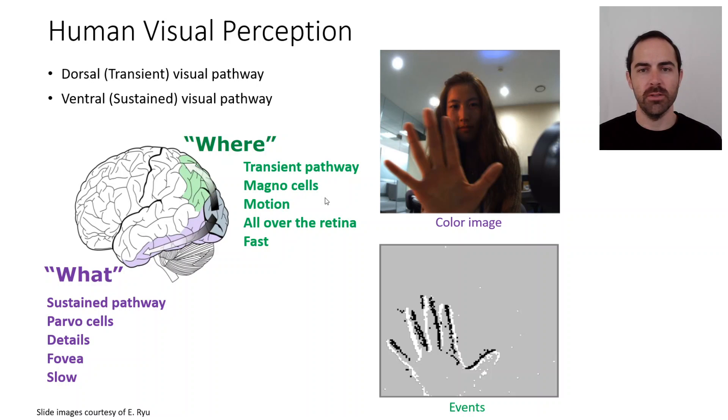If we had to show a representation of the visual information in the where pathway, that would be the one on the bottom. In this case there's a person with the hand and only the white and black dots here, these pixels, are actually the motion information.